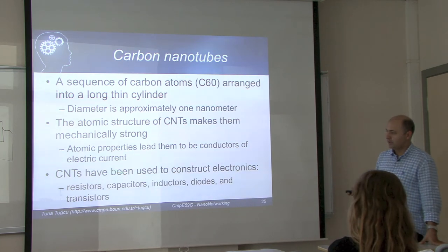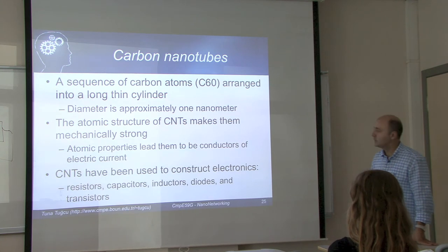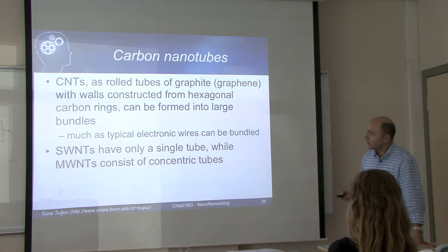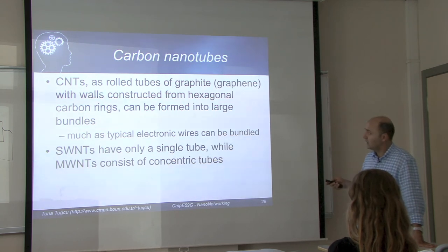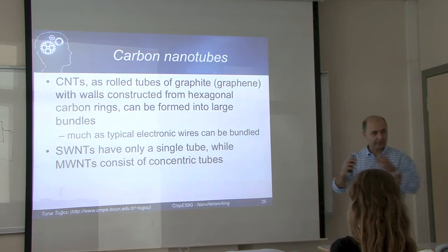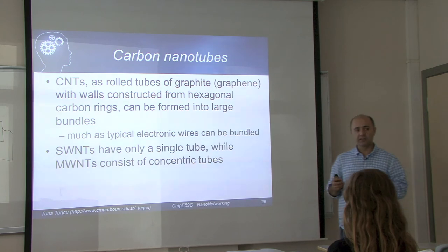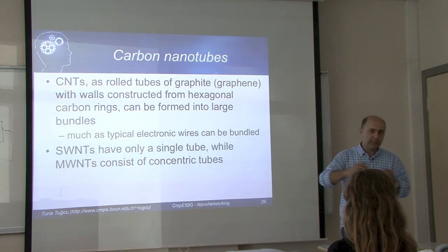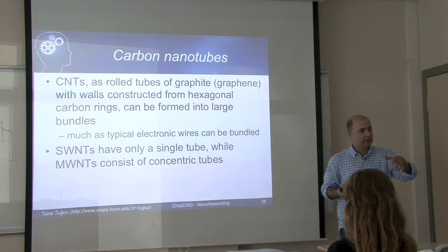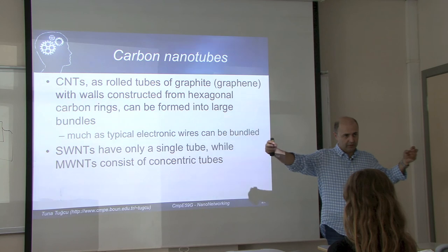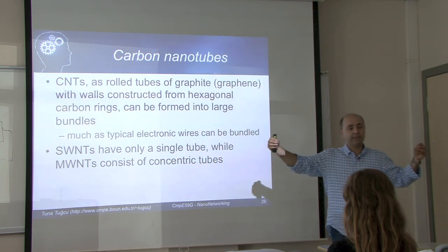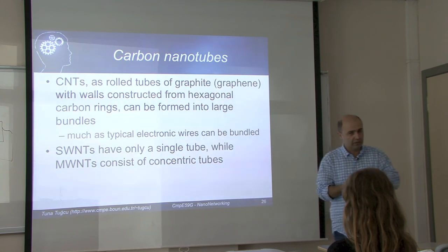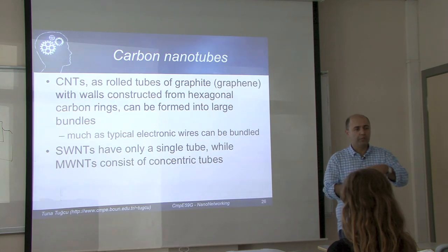Carbon nanotubes have been used to construct resistors, capacitors, inductors, diodes, and transistors. They are rolled tubes of graphite or graphene with hexagonal carbon rings. They can be formed into large bundles with multiple nanotubes side by side, or arranged concentrically — one narrower pipe inside a wider one — forming single-wall nanotubes or multi-wall nanotubes respectively.